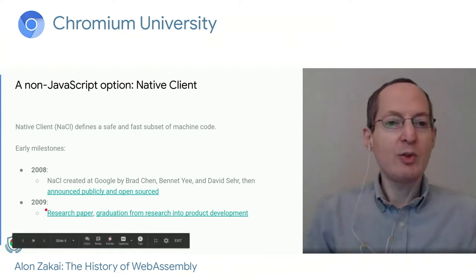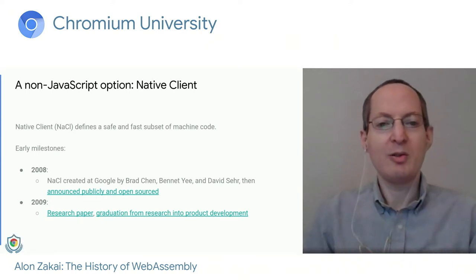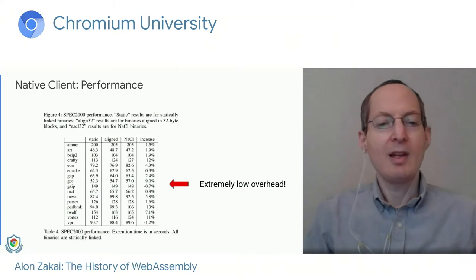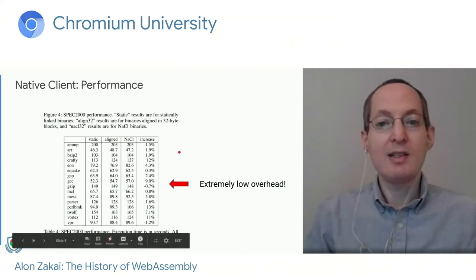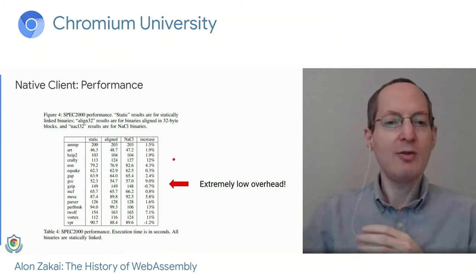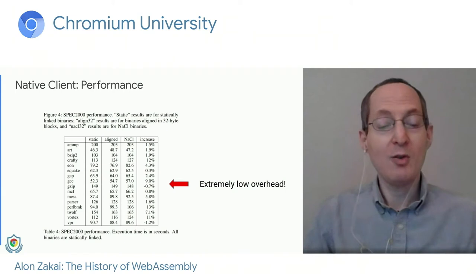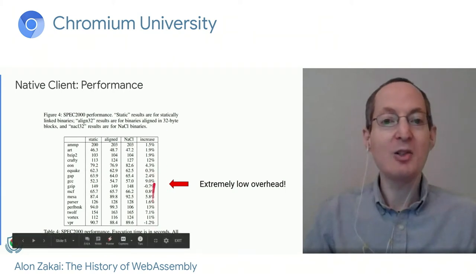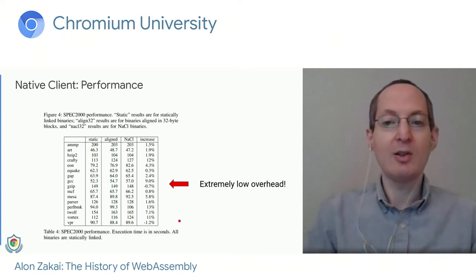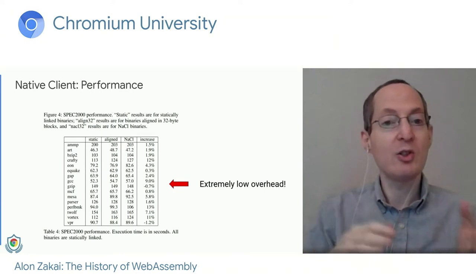Native Client showed a lot of promise. There was a research paper in 2009, and it looked good enough to work toward turning this into an actual product. One of the main reasons was speed. The overhead of Native Client compared to a regular build was very, very low — just single digits in most benchmarks. So it was running almost at full speed while also being safe to run in a browser.